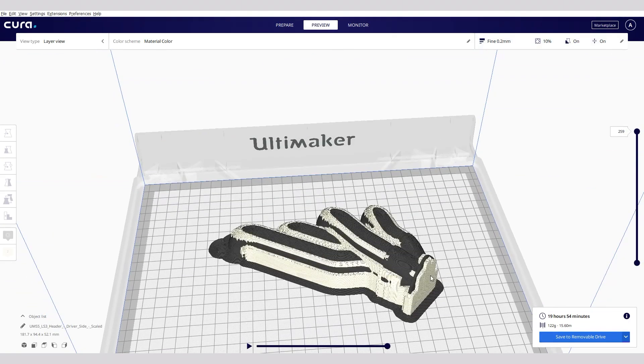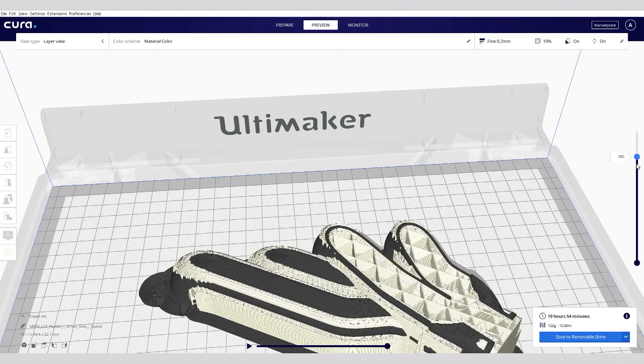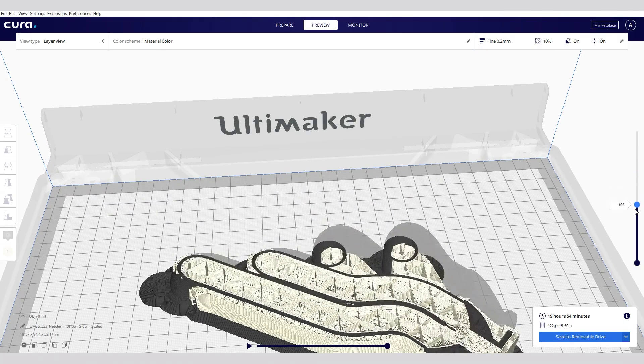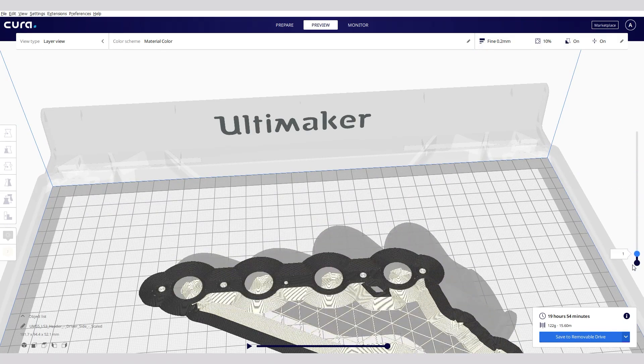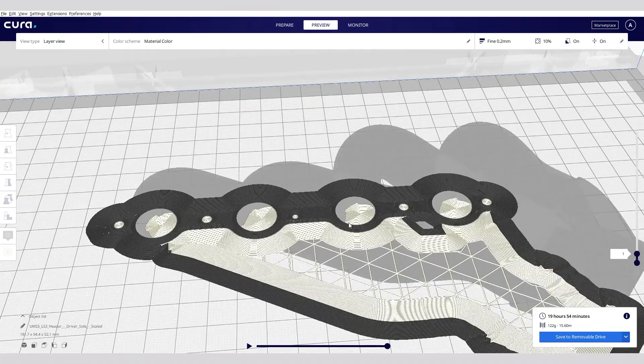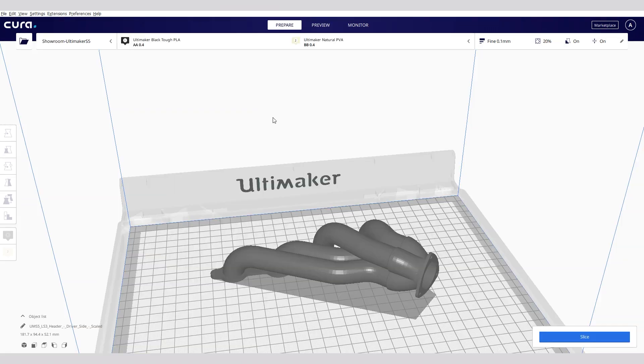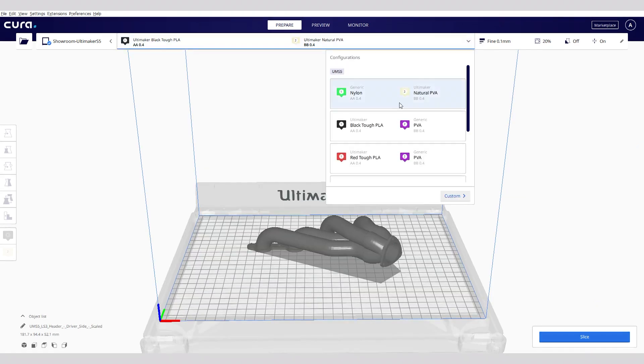Hardware is only half of the equation. Software is needed to reinforce the capabilities of any machine. Ultimaker continues to lead the 3D printing industry with their software platform, Ultimaker Cura. It's the heart of the 3D printing experience and has several unique features that enables the full potential of 3D printing.